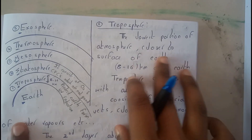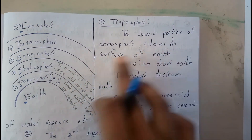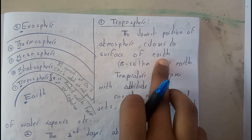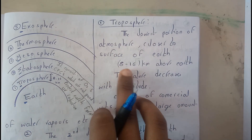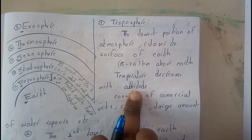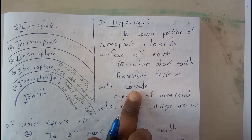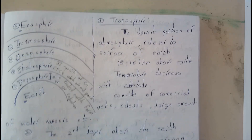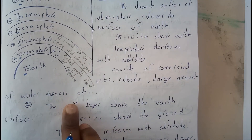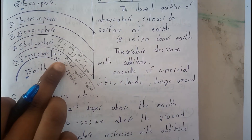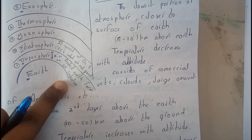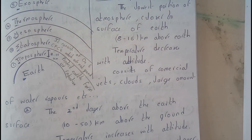Basically, what is troposphere? Troposphere is the portion of atmosphere closest to the surface of earth. It is around 5 to 16 kilometers above the earth. Temperature decreases with altitude. It consists of jets, clouds, and a large amount of water vapor. It also protects earth from UV radiation.